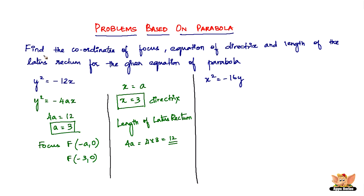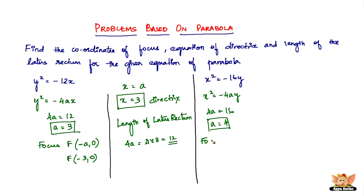Here we are with another problem, which is again: find the coordinates of focus, equation of directrix, and length of the latus rectum for the given equation of parabola x² = -16y. This is of the form x² = -4ay. We have 4a = 16, which gives us a = 4.